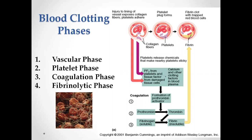This chart shows the four different phases of blood clotting. The first is the vascular phase, the second is the platelet phase, the third is the coagulation phase, and the fourth is the fibrinolytic phase. The vascular phase starts with injury to the lining of blood vessels, causing vasoconstriction to decrease blood oozing. During this injury, coagulation fibers are exposed and platelets release chemicals to make nearby platelets sticky.